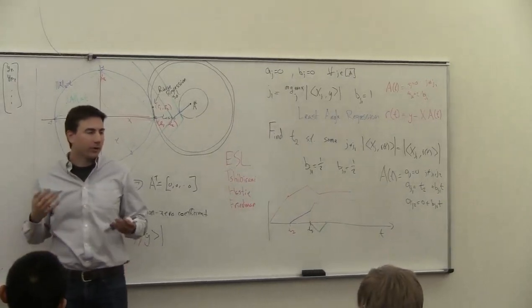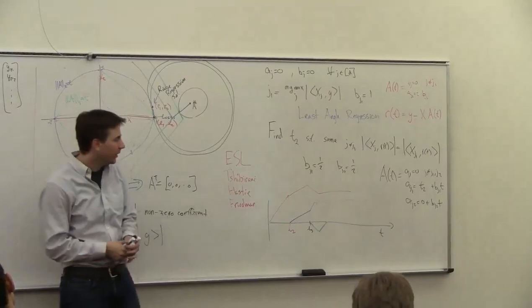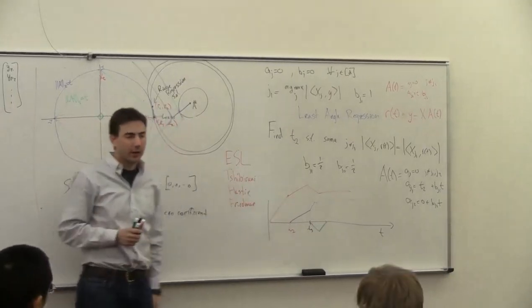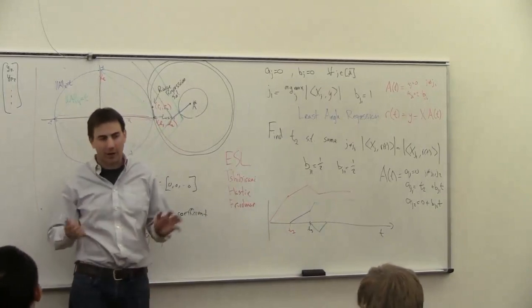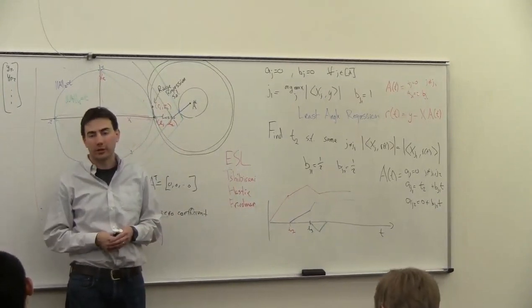So now we have all the solutions for every value of s and every value of t. We've got them stored in this plot here. Now we need to choose which one, and we'll talk about that using cross-validation on Wednesday.